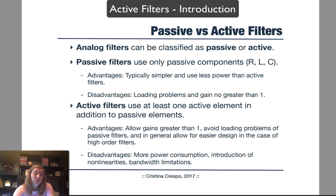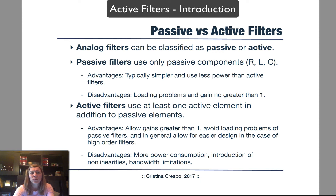Active filters do have disadvantages: they consume more power due to the active components. Active components are nonlinear devices — even though we operate them in the linear region, they introduce nonlinearities into the overall circuit. Active components also have internal capacitances and therefore bandwidth limitations that translate into bandwidth limitations for the filter as well. Passive filters typically are used in first-order or sometimes second-order filter applications, while active filters are more common in higher-order filter applications.